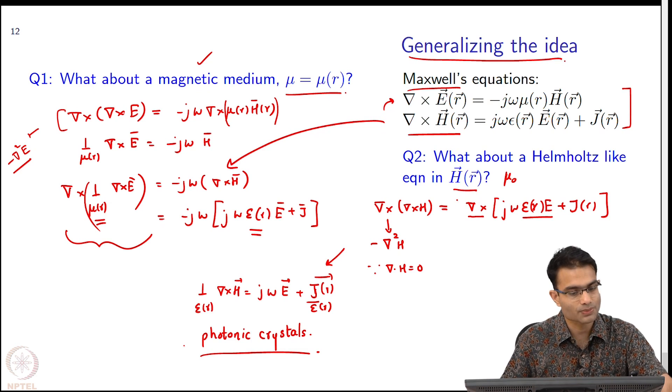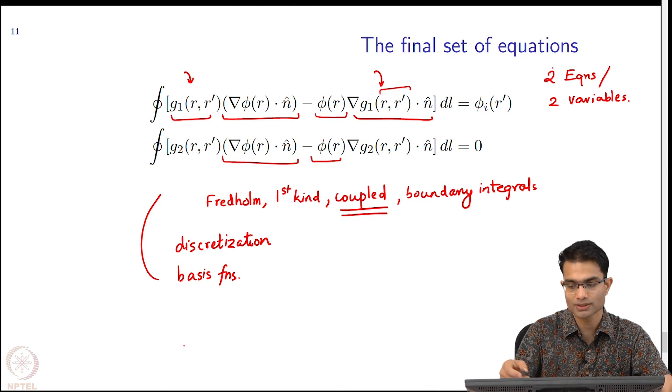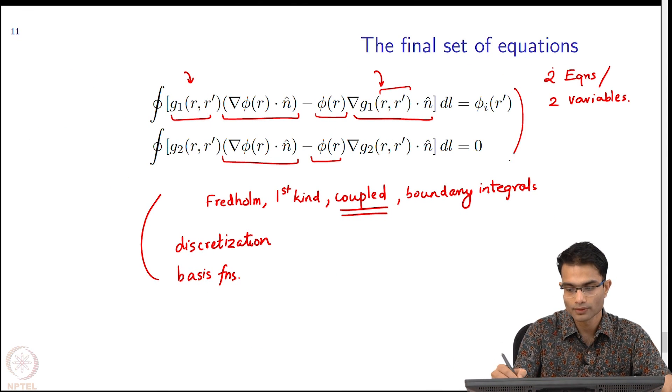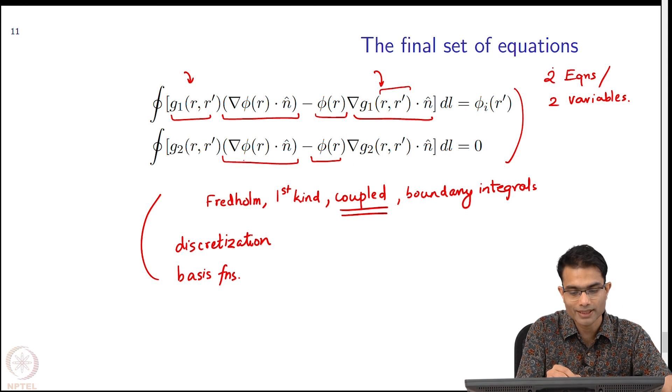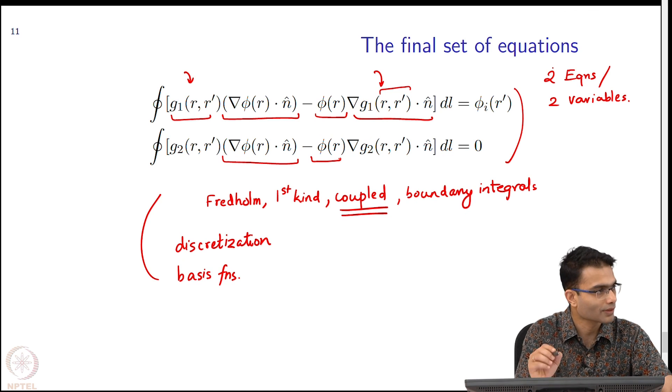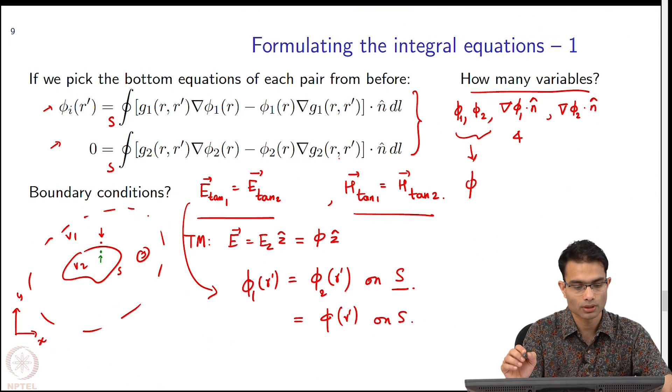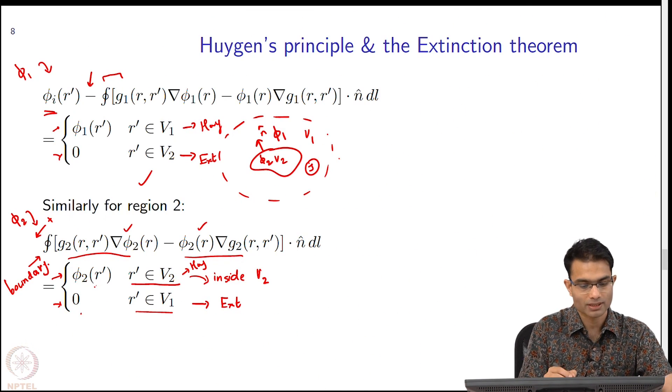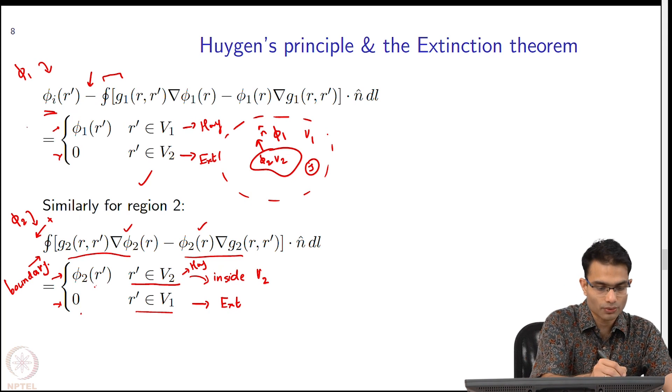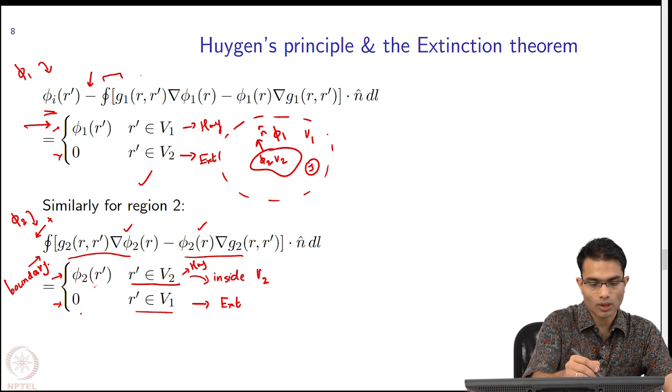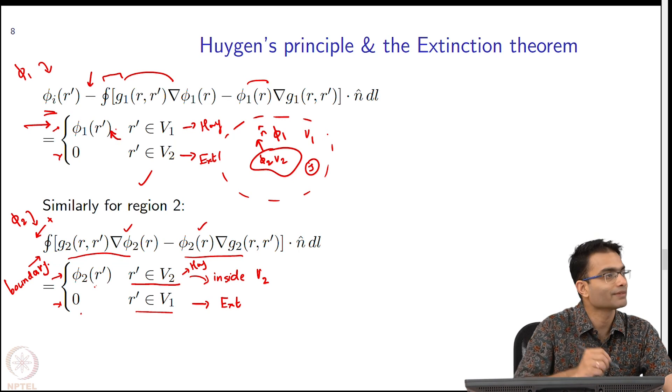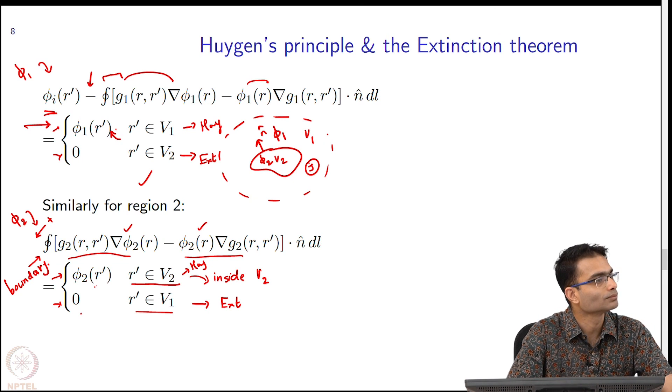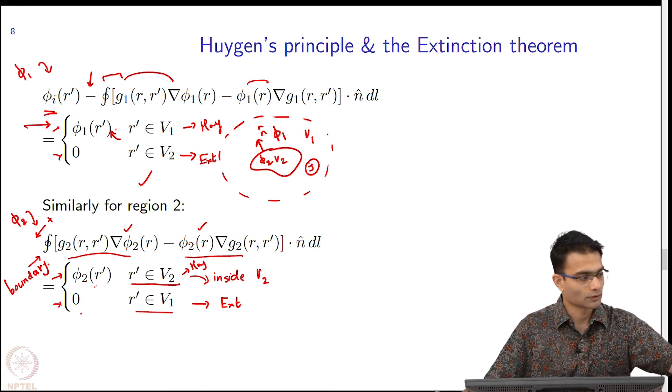Once we get these, once we solve these using the extinction theorem, we solve it, we get grad phi dot n hat and phi. Once we have got it then we go back to Huygens principle and substitute it into this one. So, I know this now, I know this now, I will get field anywhere. So, it's a two step process, all right.